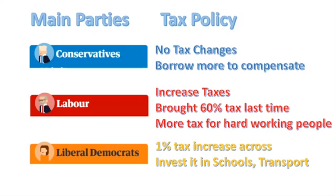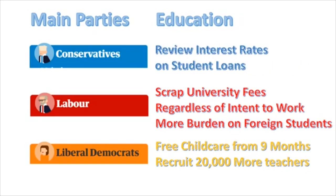From a tax perspective, Conservatives are proposing probably the best policy — no tax changes, though they may borrow more to compensate. Labour are proposing a large increase in taxes; last time in power they introduced a 60% tax rate for people earning over £100,000, effectively taxing hard-working people. Liberal Democrats are more moderate, proposing roughly a 1% tax increase, though their policy should be taken with a pinch of salt. It's worth noting that people earning £100,000 have typically reached that level after 20 to 30 years of hard work.